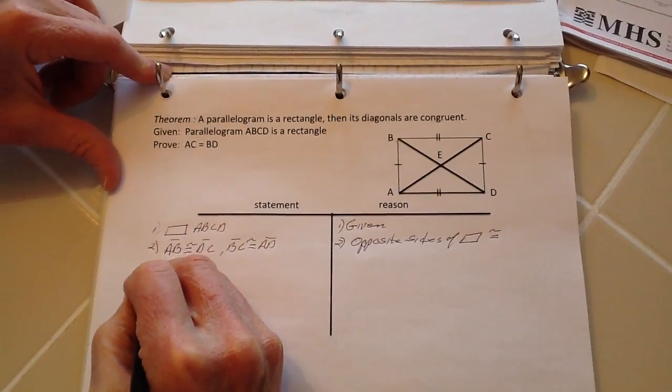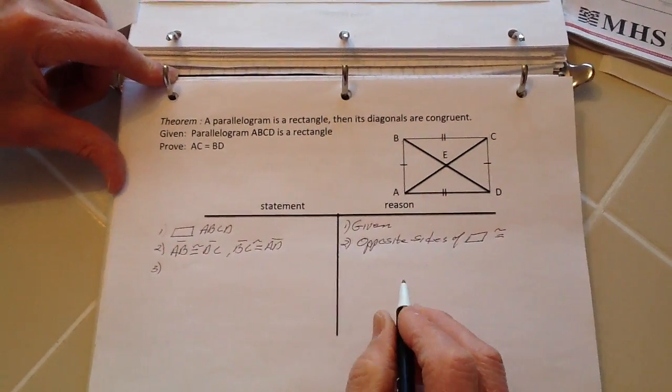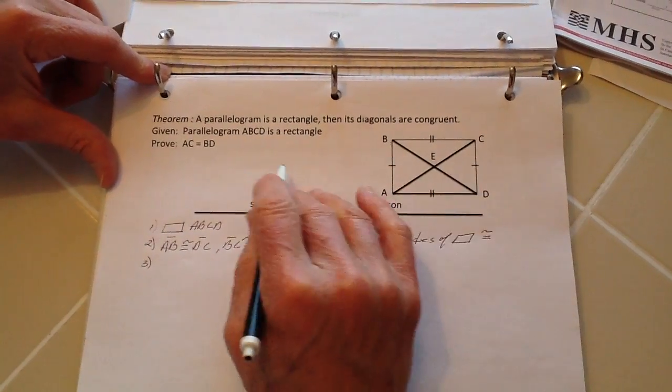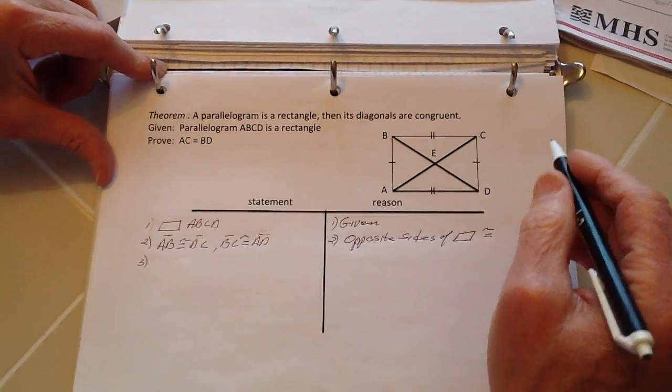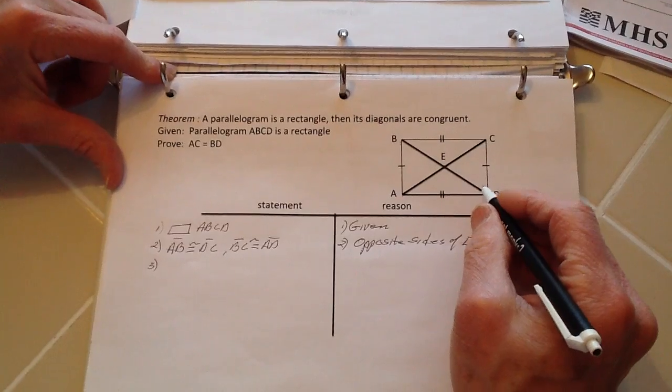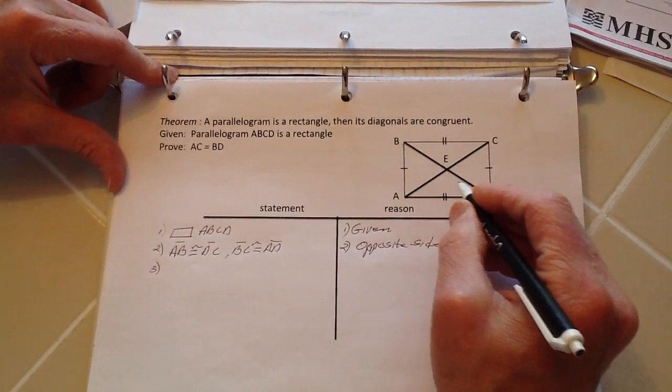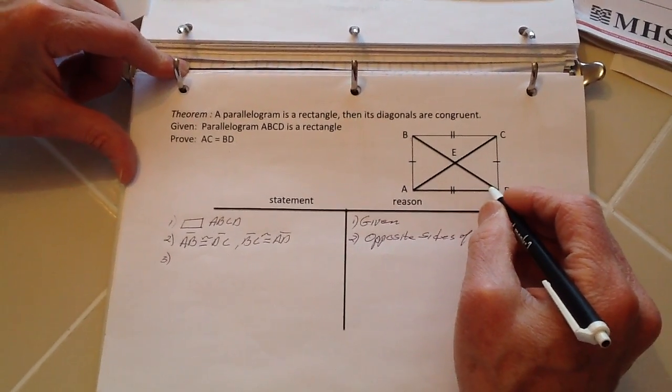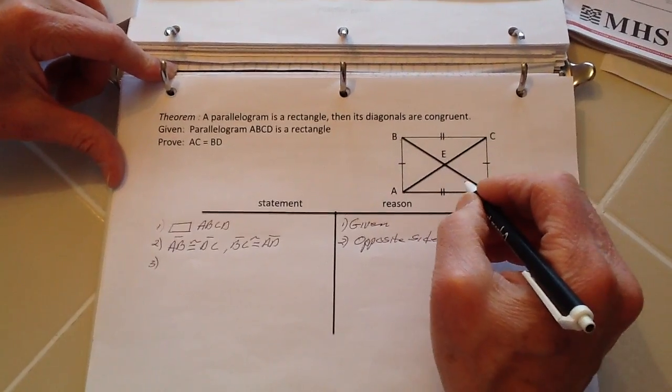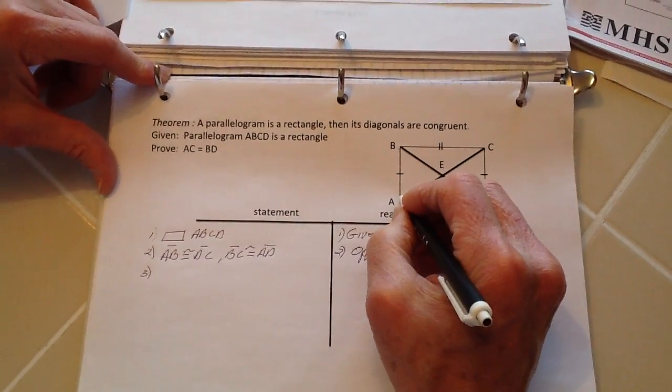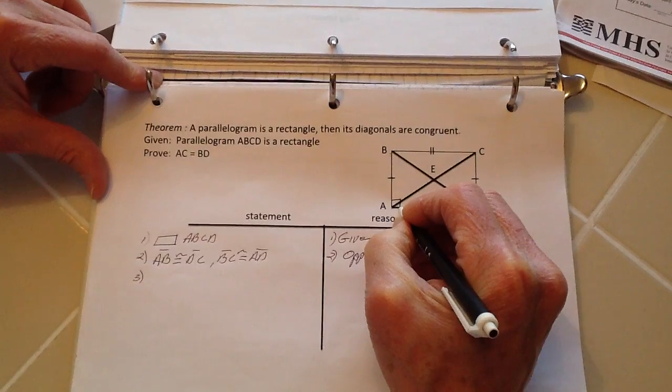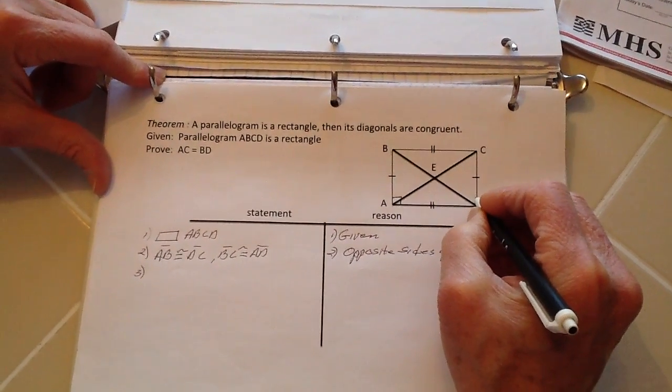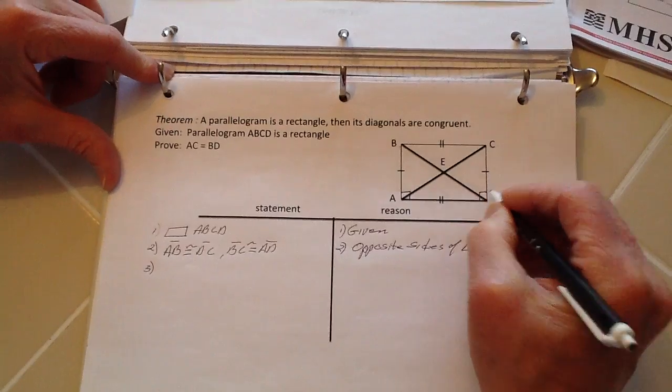Number three: I know that this is a rectangle because that was what was in the given. I know therefore that this angle right here, let's see, I'm going to use this angle of A, this angle, and therefore what I have here, I can make, I know these two angles right here.